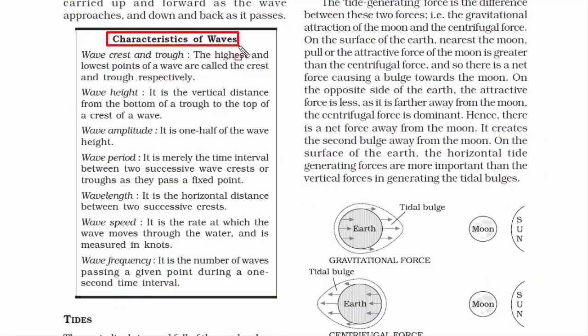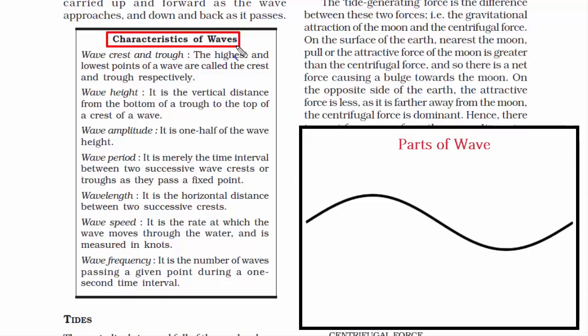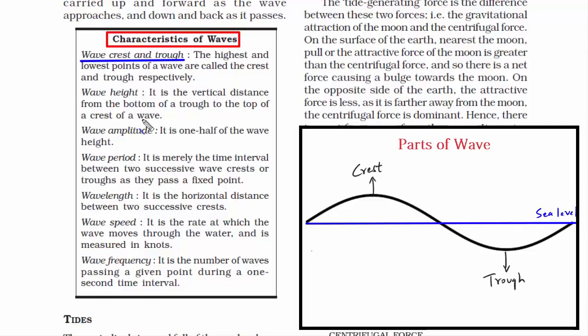Let's cover the characteristics of waves. The first is wave crest and trough — the highest and lowest points of a wave. The second is wave height — the vertical distance from the bottom of a trough to the top of a crest. If you draw a straight line representing sea level, the crest is above and the trough is below. Wave height is the vertical distance measured between these two points.